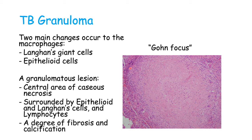Here is some lung tissue, and we see this well-circumscribed area. We have a central area of caseous necrosis — termed caseous necrosis as it looks like cheese, or has a cheese-like appearance. Surrounding it, we have epithelioid cells and Langerhans giant cells. Here we can see a Langerhans giant cell — it has multiple nuclei and looks somewhat like a horseshoe. We also have lymphocytes around it. This focus of infection is termed a Ghon focus.